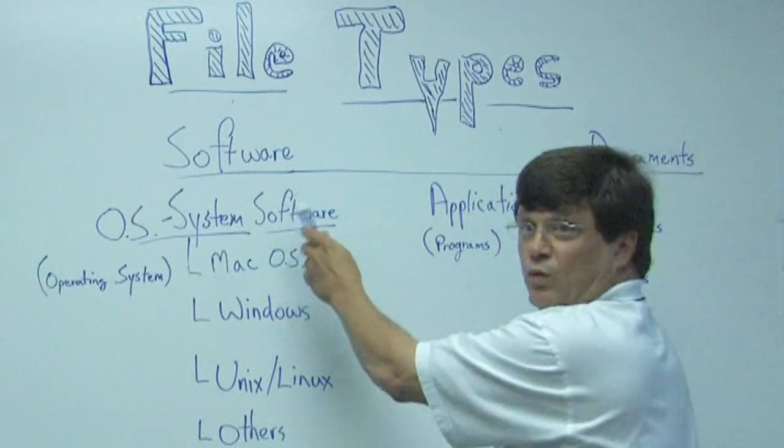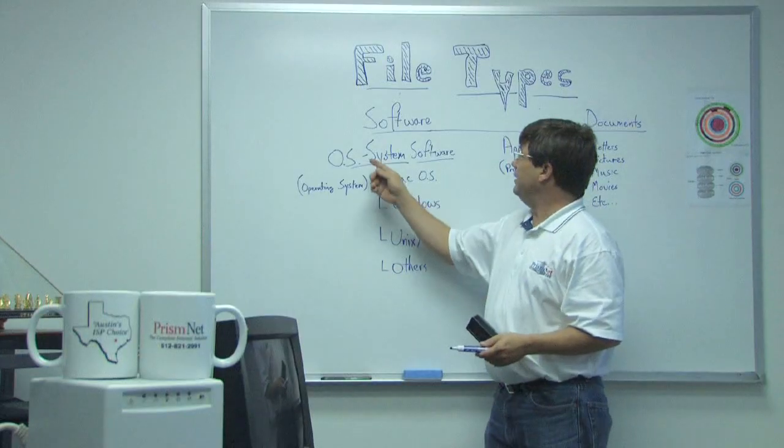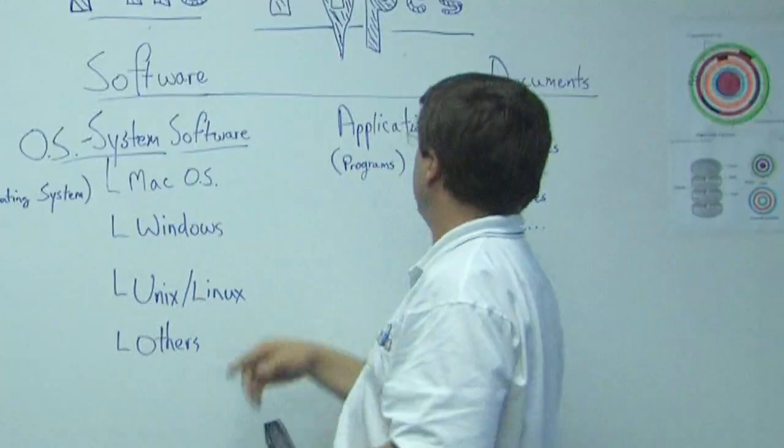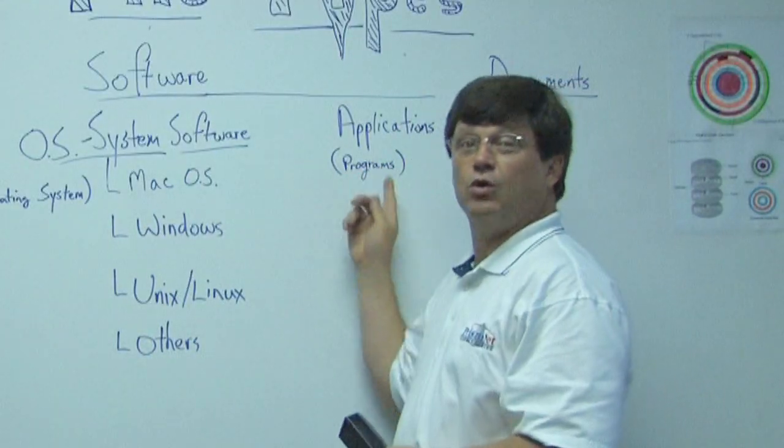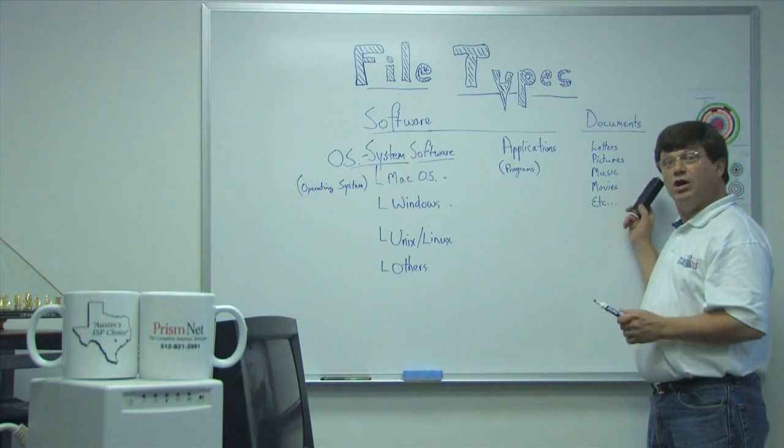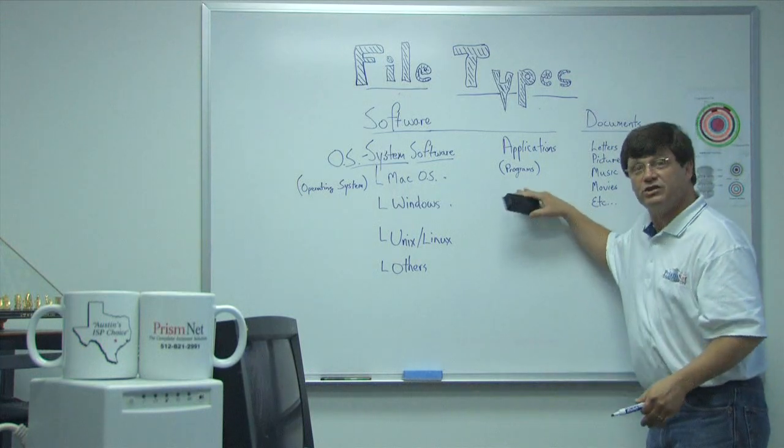We have software and documents. There's the operating system or the system software, and there are applications or the programs. The last kind of files that we have on a computer are documents. Those are the things that you actually make with the software program.